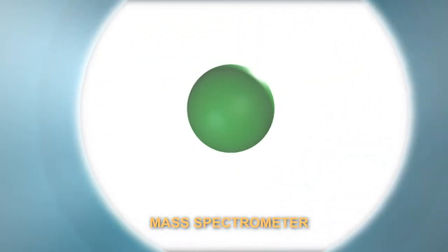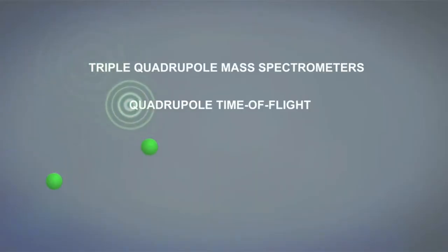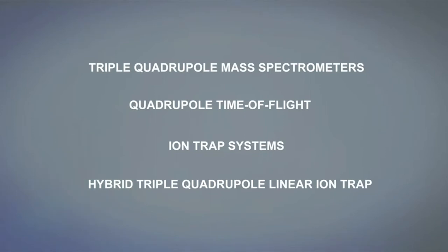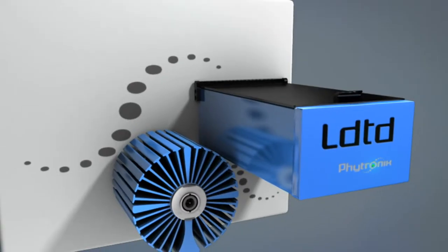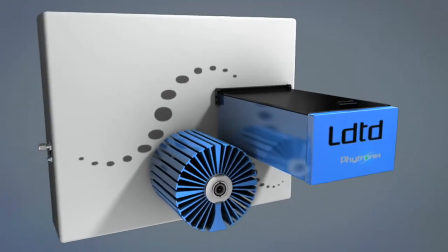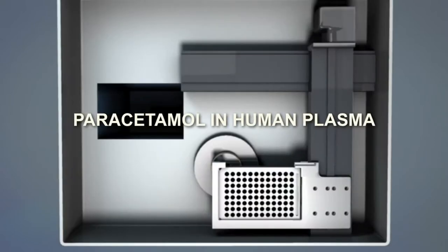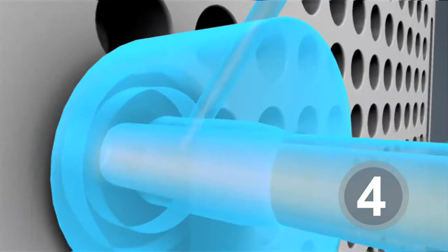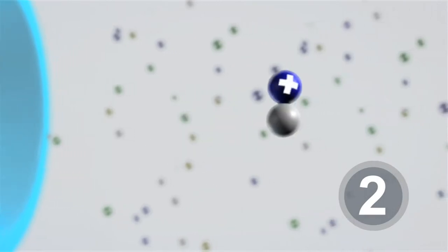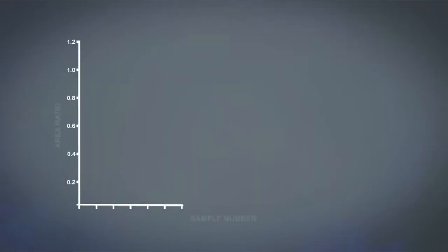The LDTD can be interfaced to any mass spectrometer brand you're using. Are you ready to discover the analytical speed of light in real time? Let's start. LDTD allows sample desorption in 1.8 seconds.